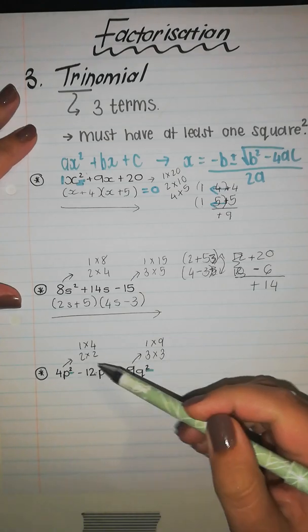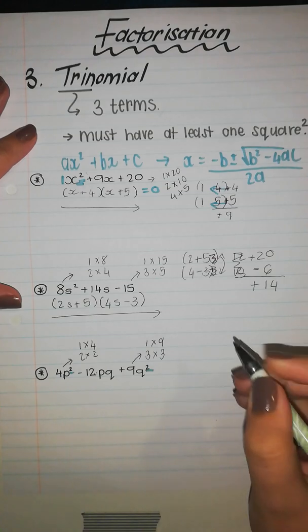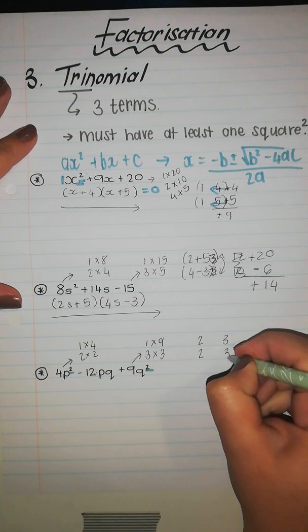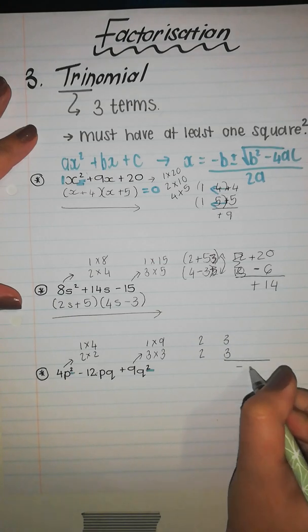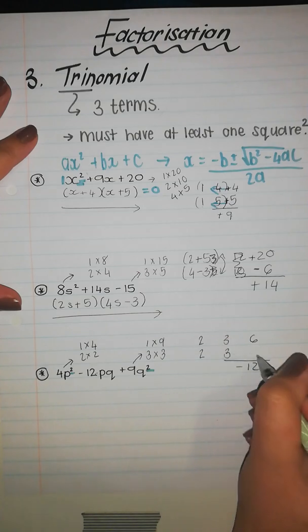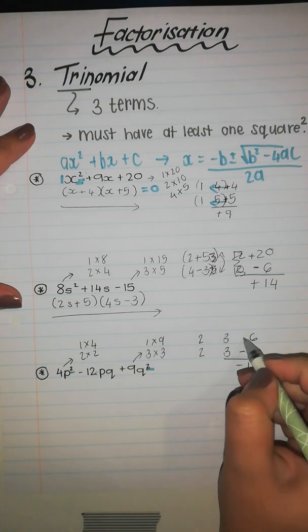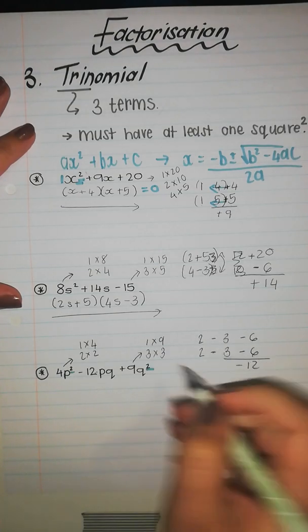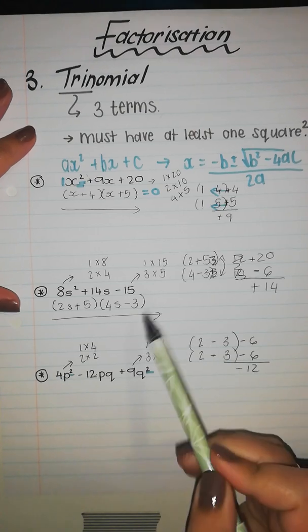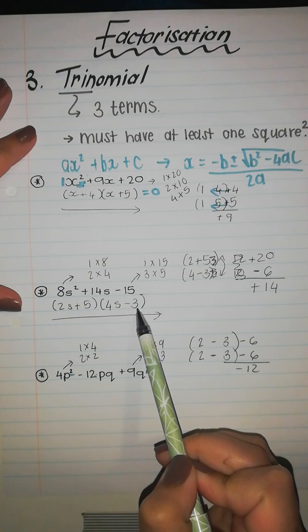If I quickly look at it, I know that 2 times 3 is 6 and 2 times 3 is 6, and that will get me to 12. So I'm going to say 2 times 2 and 3 times 3. I want negative 12, so 2 times 3 is 6, 2 times 3 is 6. How am I going to get to negative 12? I'm going to say negative, negative. This is going to be my brackets, but now do you see in the previous ones we had nothing at our last term, so our second term in the bracket had nothing.